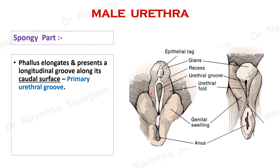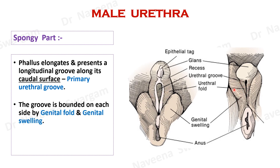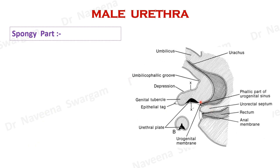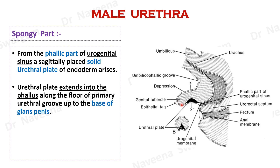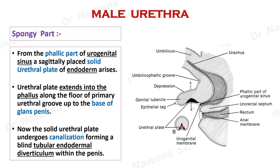On either side of the groove are genital folds and genital swellings, and behind it is continuous with urogenital membrane. At this stage, endodermal cells from the phallic part of urogenital sinus proliferate to form a solid cellular plate sagittally, which extends into the developing phallus till the base of glans penis. Further, the urethral plate undergoes canalization by degeneration of central cells and remains as a tubular endodermal diverticulum within the developing penis.